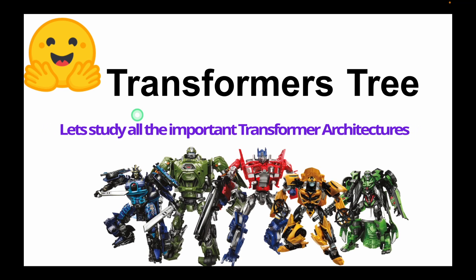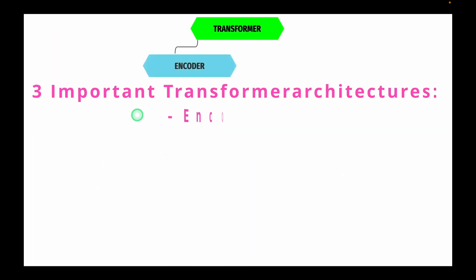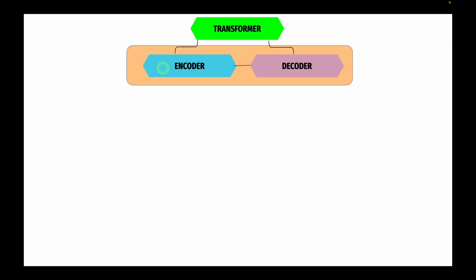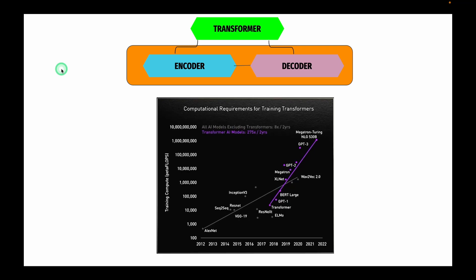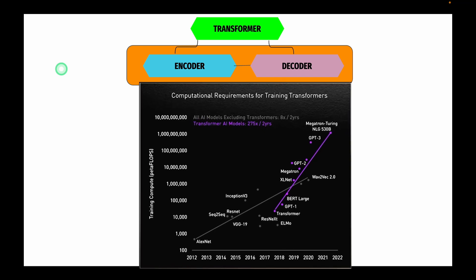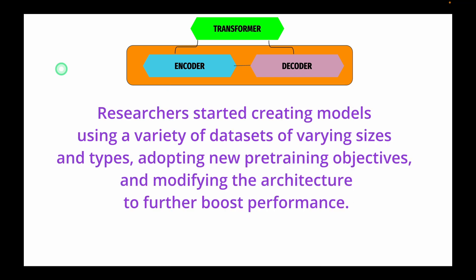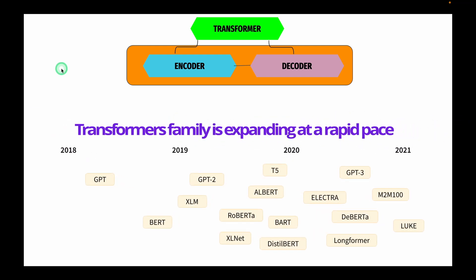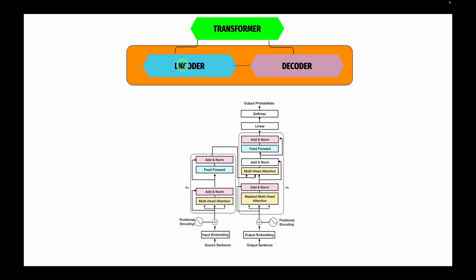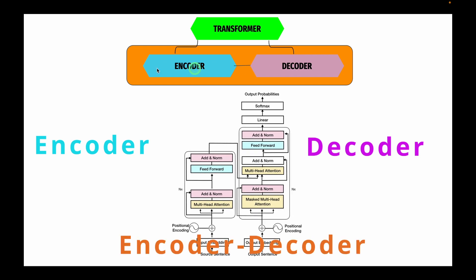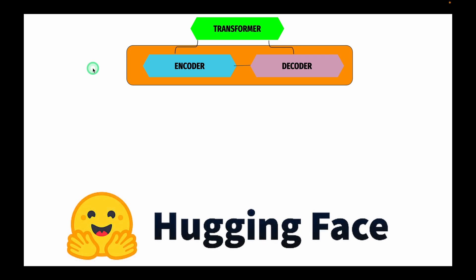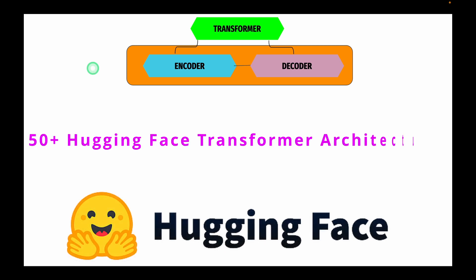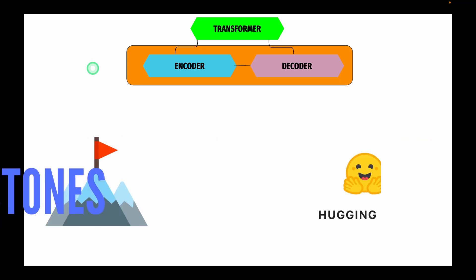There are three important architectures for transformer models: encoder, decoder, and encoder-decoder architecture. The early transformer models' initial success spurred an explosion in model development. Researchers started creating models using a variety of datasets of varying size and types, adopting new pre-training objectives and modifying model architectures to boost performance. Although the family of models is still growing rapidly, they can still be divided into encoders, decoders, and encoder-decoder architectures. Up till now there are more than 50 different architectures available in Hugging Face Transformers. In this video I will cover some of the important milestones.